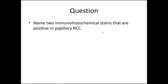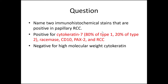Name two immunohistochemical stains that are positive in papillary renal cell carcinoma. The most commonly used are cytokeratin-7 and racemase. Other stains include CD10 (nonspecific), PAX2 (indicates renal origin), and RCC antigen (specific but not very sensitive). So the best answer is cytokeratin-7 and racemase. Be aware that not all cases are strongly positive — it is type 2 that is more likely to have lower expression of cytokeratin-7.